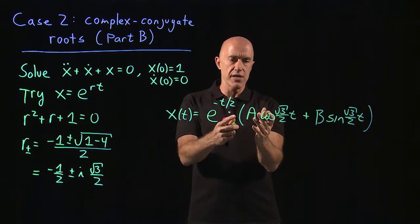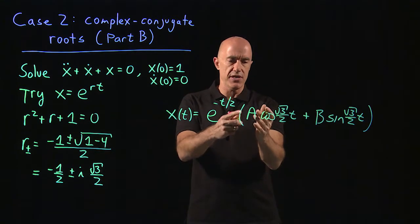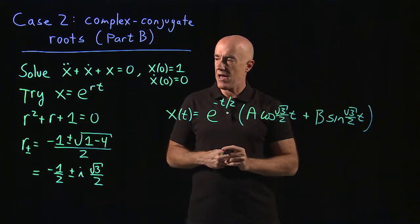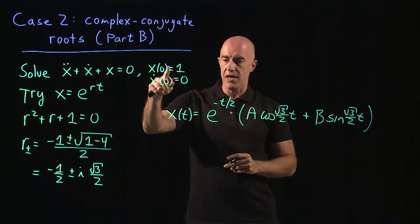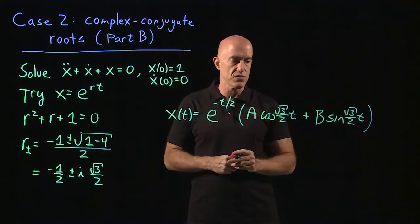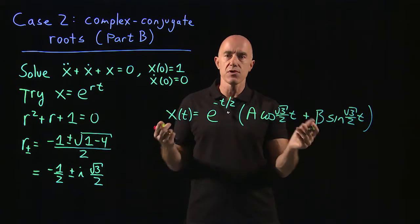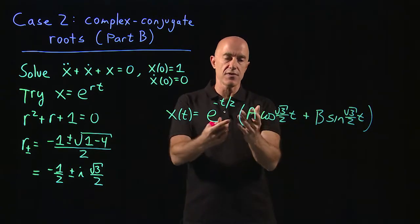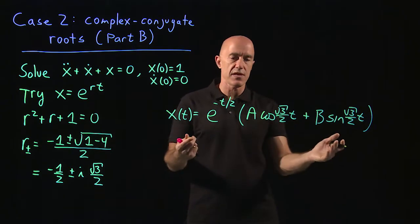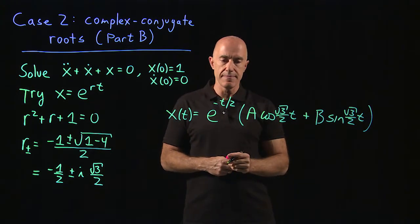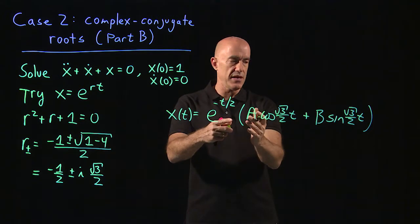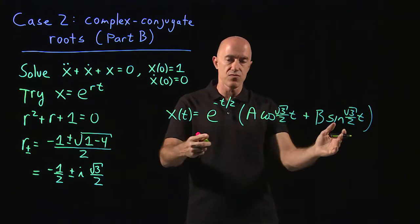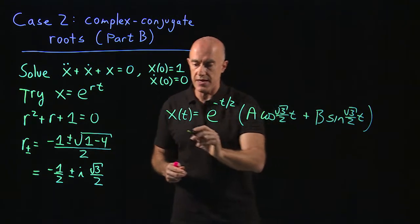We have two free coefficients here, a and b, and we have to use them to satisfy these two initial conditions. Unfortunately, we have to take the derivative of this, and we're going to have to use the product rule to do that.